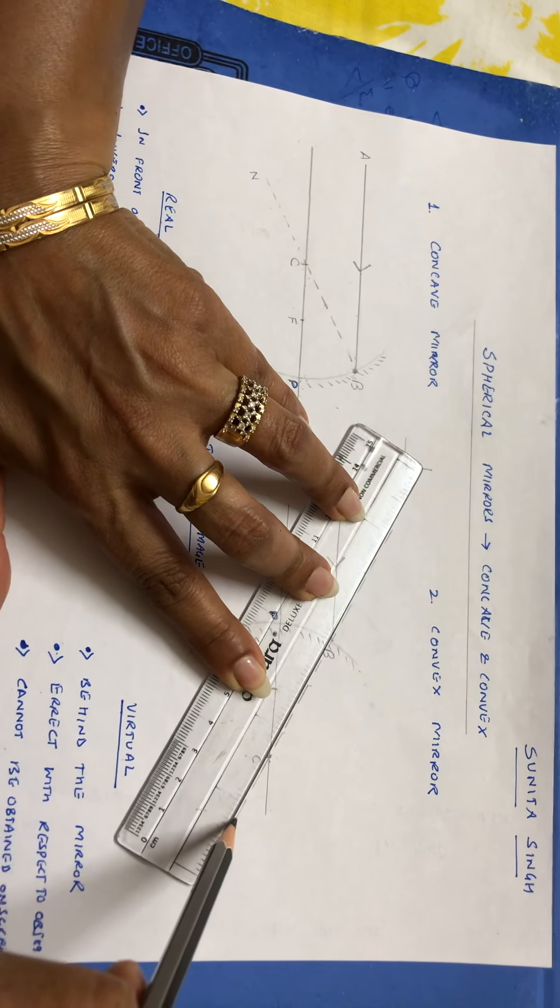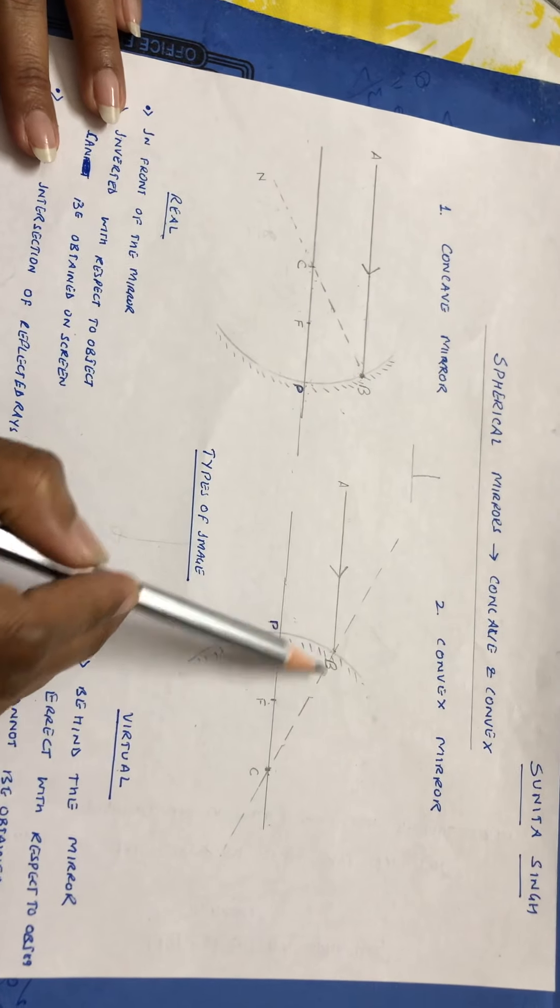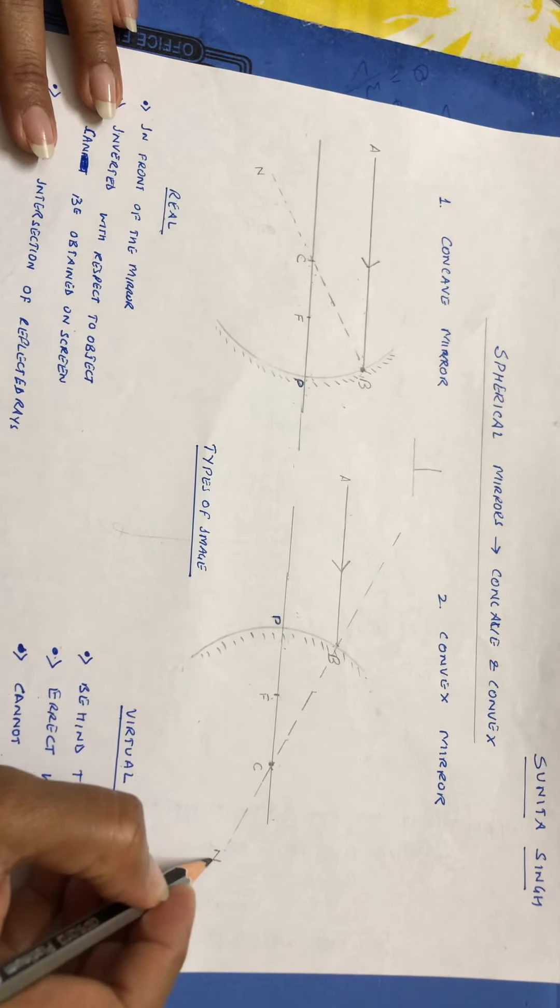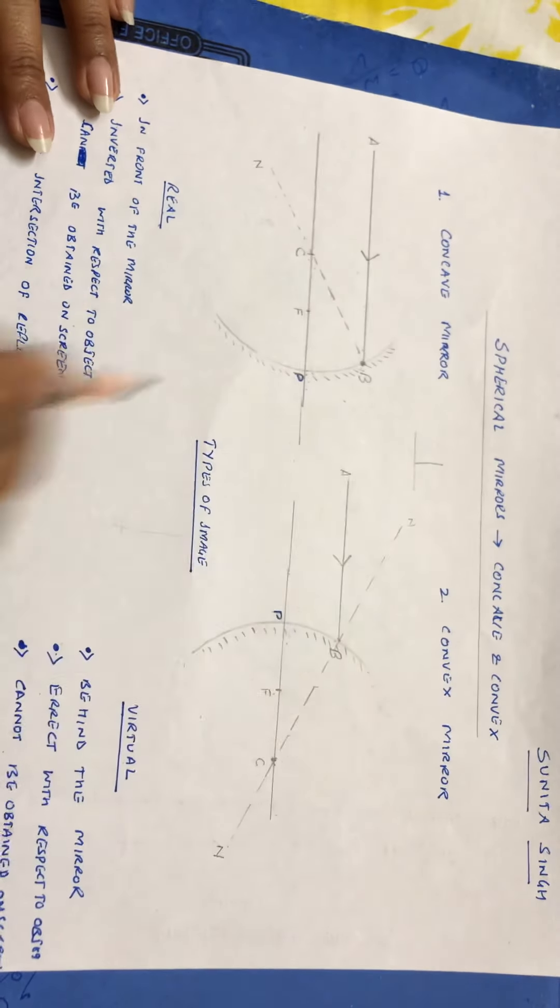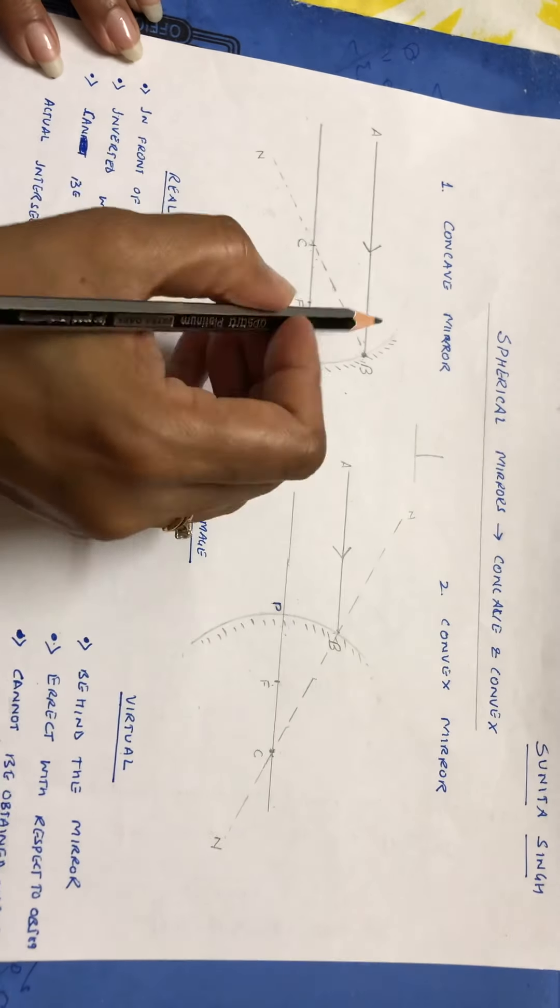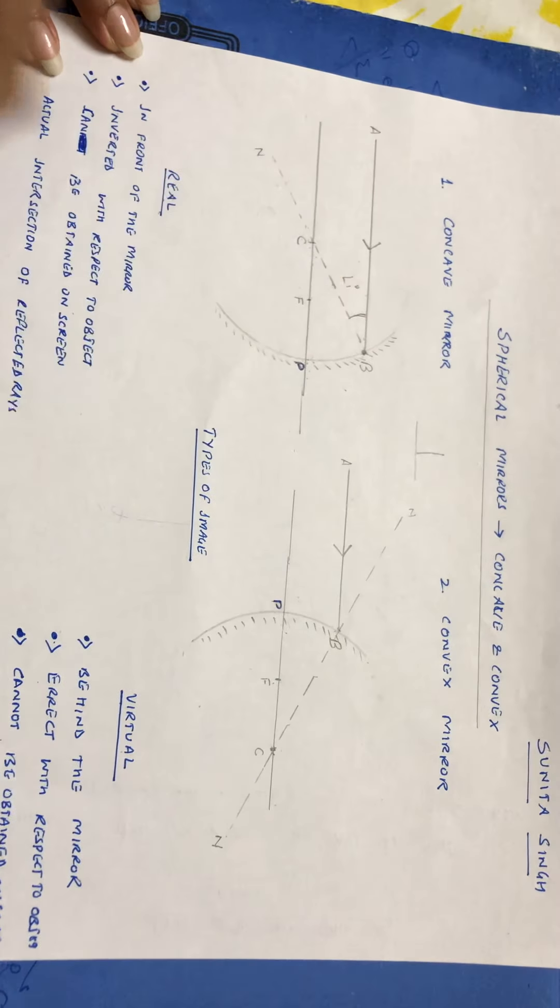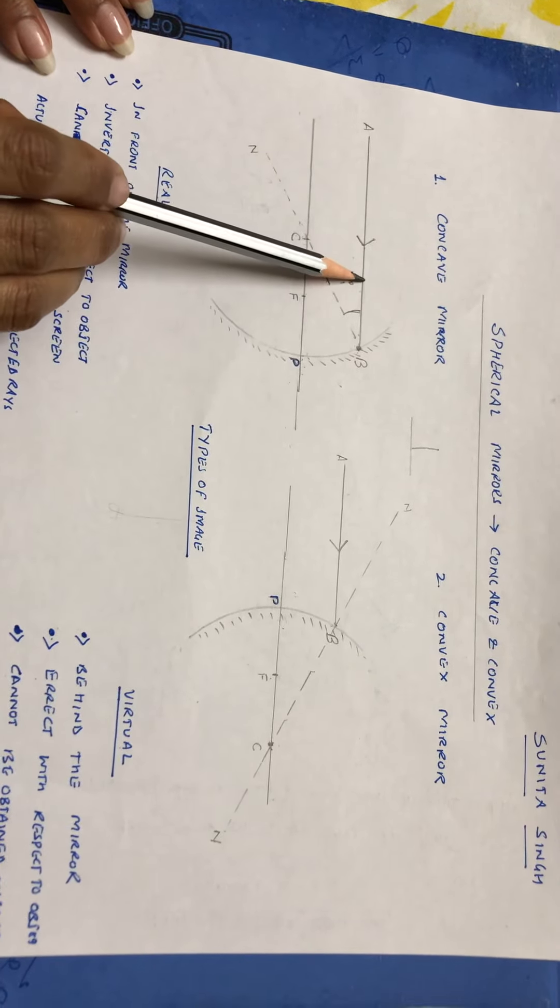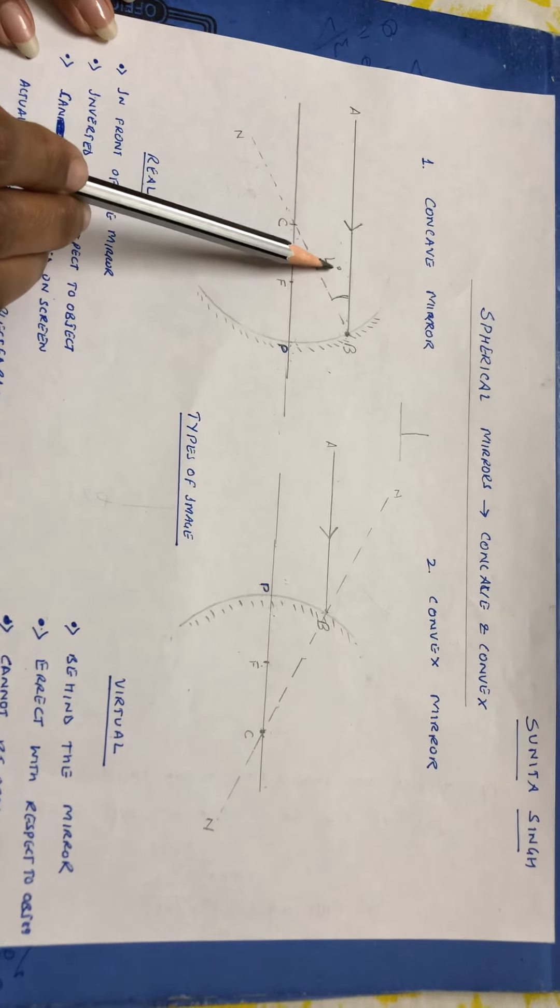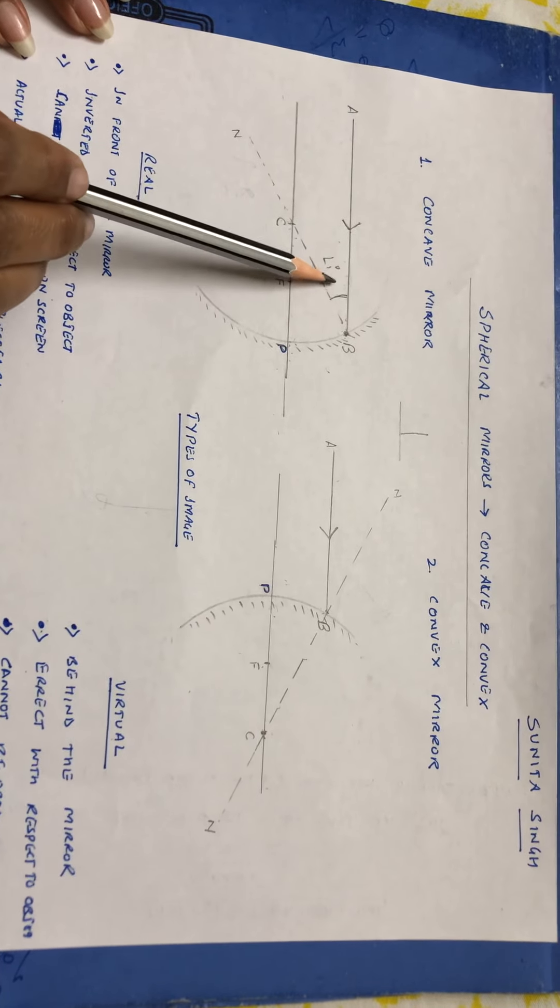Any ray, wherever it strikes the mirror, you have to simply join that point of incidence to the center of curvature. This line is now acting as a normal. So this is the normal now. Now that our normal has come, we will be able to mark angle i. This is angle of incidence. I told you, the angle made by the incident ray with respect to the normal is called angle of incidence.